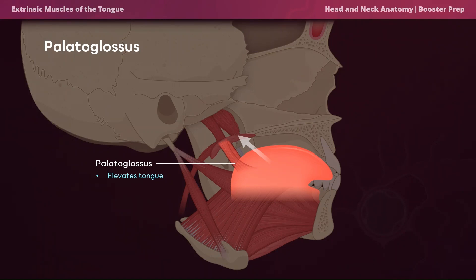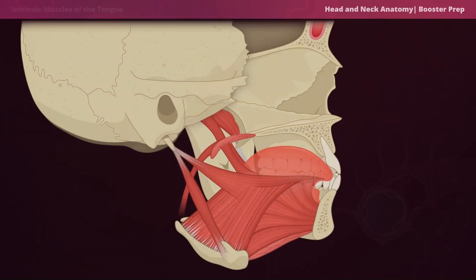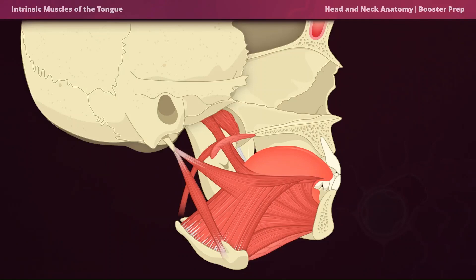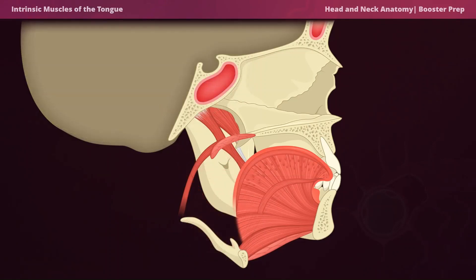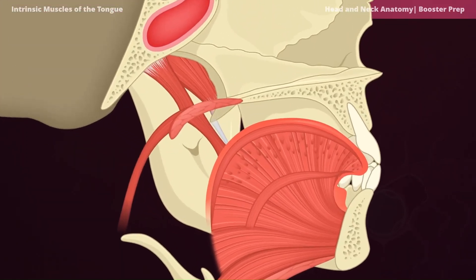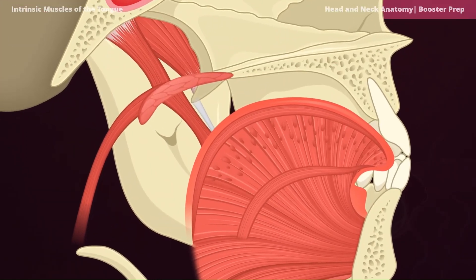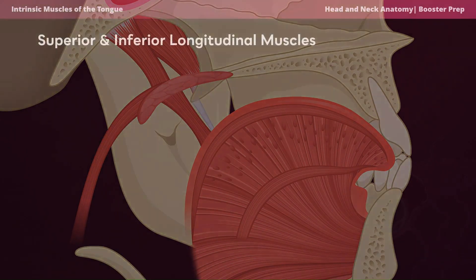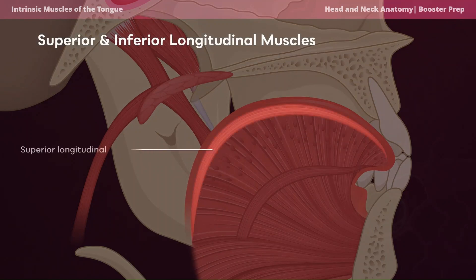Now we're going to move on to the intrinsic muscles of the tongue, which means these are muscles that lie entirely within the tongue. Let's get a nice cross-section and a zoom in on the tongue so we can see what we're talking about.